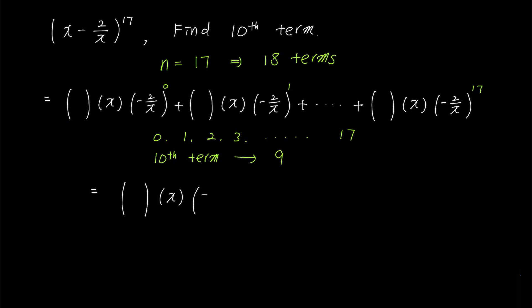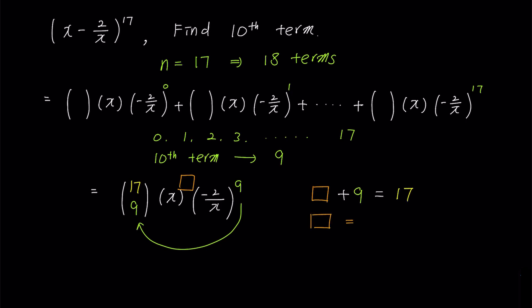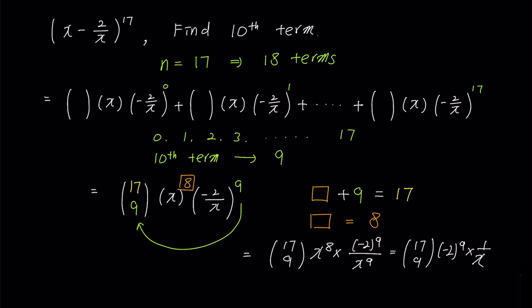Now let's find the term. The first value of the combination will be 17, which is the exponent of the term we are trying to expand. We'll put 9 — the exponent of negative 2 over x — in the combination as well. The sum of all exponents in binomial expansion is always constant. If we call the exponent of x as a square, then square plus 9 should equal 17, so the exponent of x will be 8. The answer is 17C9 times x^8 times (-2)^9 over x^9, which simplifies to 17C9 times (-2)^9 times 1 over x. The value is too large to calculate, so we'll leave the answer as is.